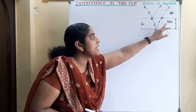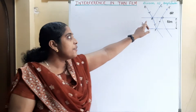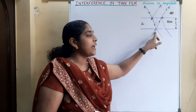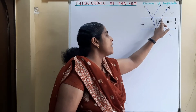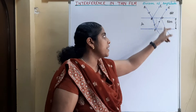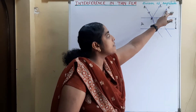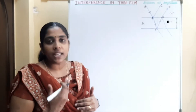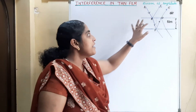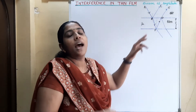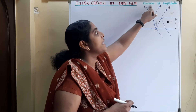Consider a thin film of thickness T and refractive index mu. A ray of light AB is incident on the top surface of the film. A part of it is reflected along BC and other part is refracted along BF. At the point F, it again undergoes reflection and refraction. At the point D, one part gets transmitted and other part is reflected into the film. These two reflected rays — the first reflected ray from the top surface and from the bottom surface of the film — overlap each other and produce interference. This type of interference produced in thin film is known as division of amplitude.